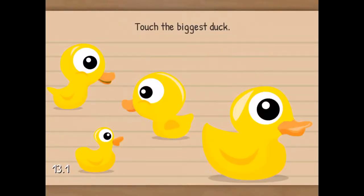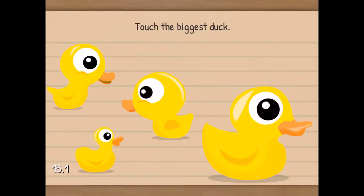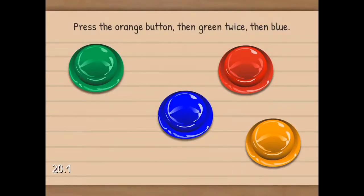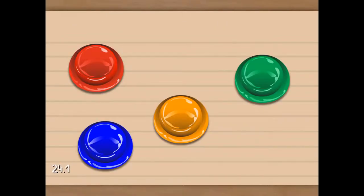Red, blue, green. Touch the biggest duck. This one. Touch the bee. So the animal. Press the orange, then green, twice, then blue. Orange, green, green, blue.